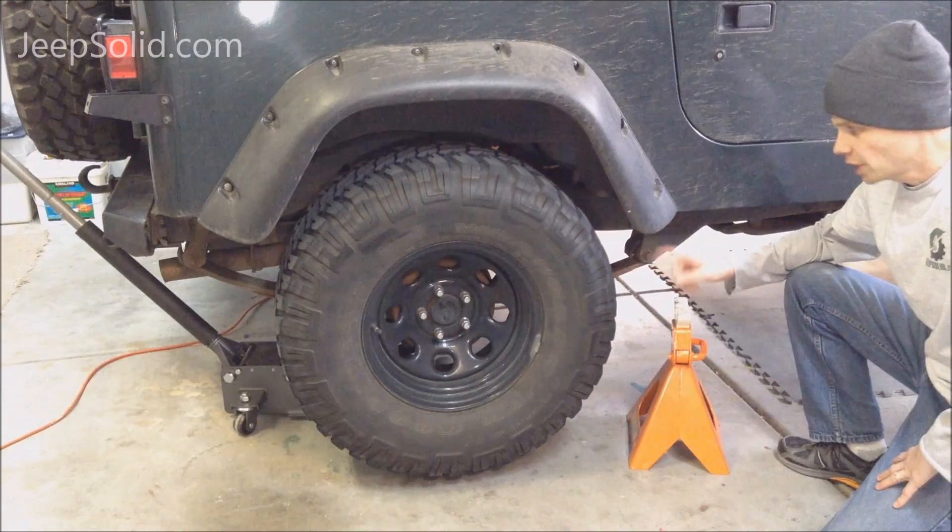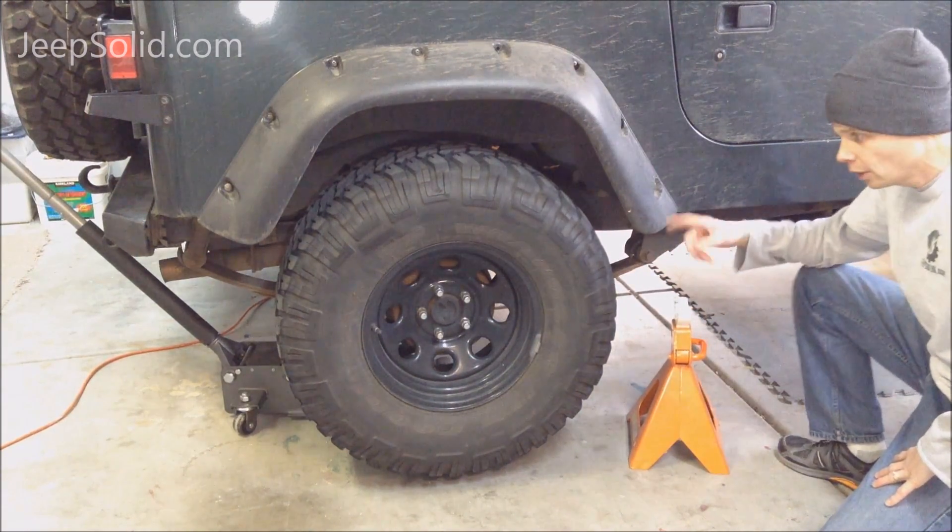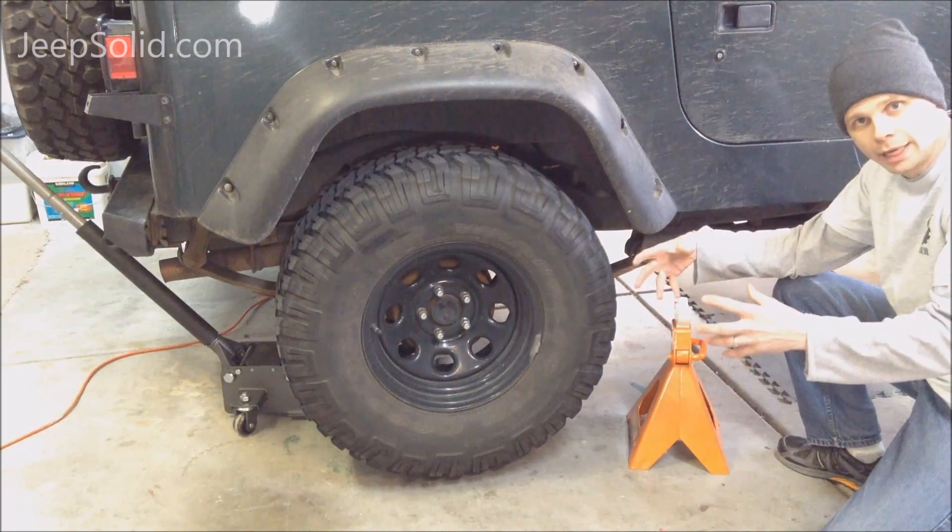The first thing we're going to do is jack the Jeep up and put some jack stands on the frame of the Jeep. We want the axle of the Jeep to be able to hang down.